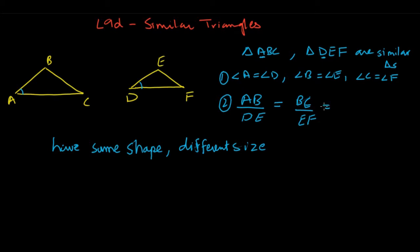So this ratio would be equal. And similarly, if I take the last side ratio AC over DF, that would be equal too. So this is what similarity gives you: angles equal and ratio of corresponding sides equal.